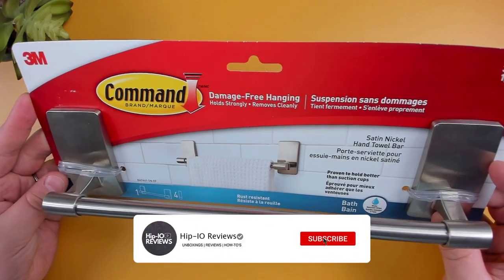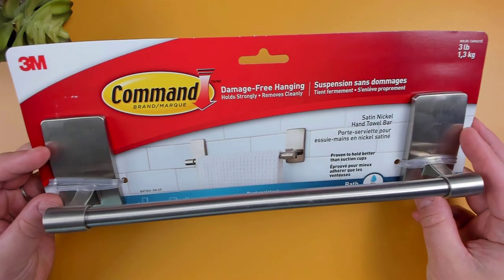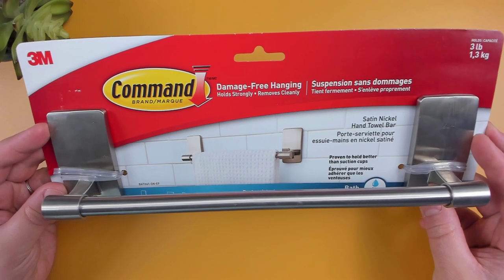With the Command Towel Bar, it's secured to the wall using the Command Stickers. So if I get placement remorse, I just pull down on the strips and remove the bar without damaging my walls.